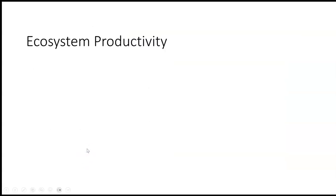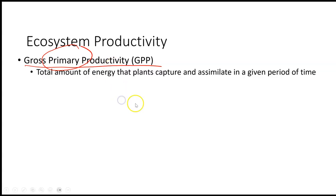We're going to talk about ecosystem productivity. We have a term called gross primary productivity. Primary productivity is referring to our producers, our plants and algae in an ecosystem. So how much energy can plants capture and assimilate in a given period of time? This is dependent on climate and soil quality, but we can actually calculate that total amount of energy that plants bring in over a given period of time. That is the gross primary productivity. If we have plenty of water and sunlight and good soil nutrients, we can have high gross primary productivity.